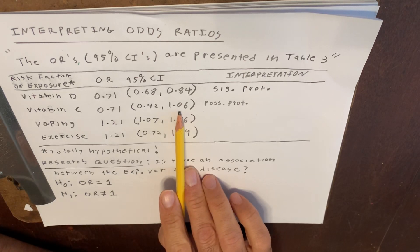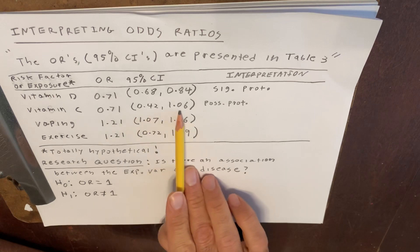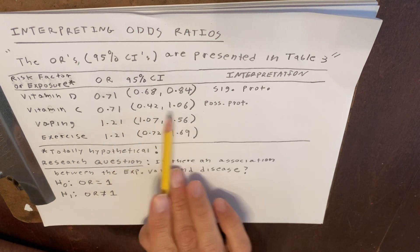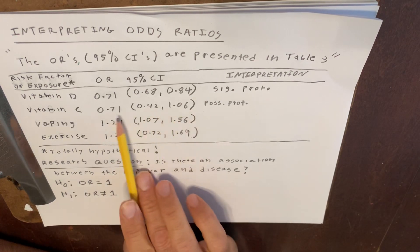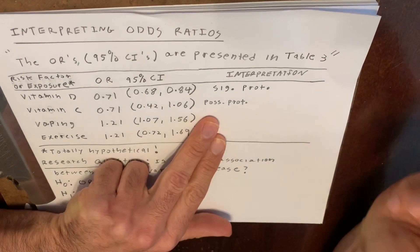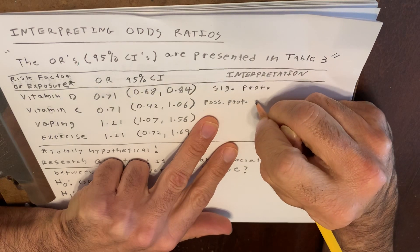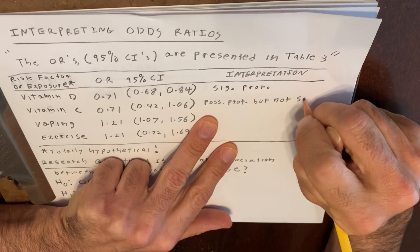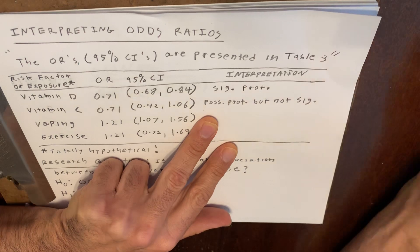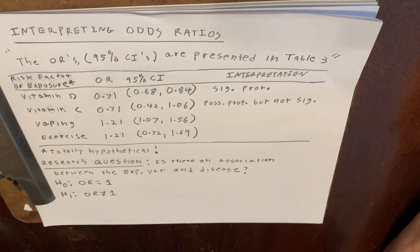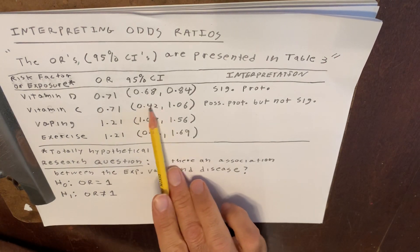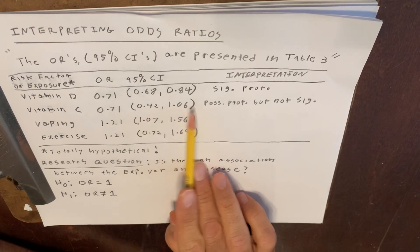The lower bound would suggest vitamin C is protective, but the upper bound would suggest that vitamin C is actually a risk factor. Confidence interval, make up your mind! This is the whole point — the variability is so large in this point estimate that this is not a statistically significant effect. I would interpret this as possible protection, but not statistically significant at the 5% significance level. The bounds don't agree: one suggests possible protection, one suggests possible risk.